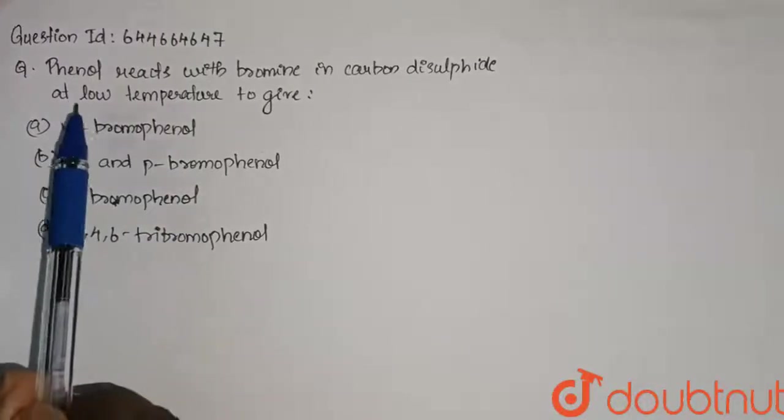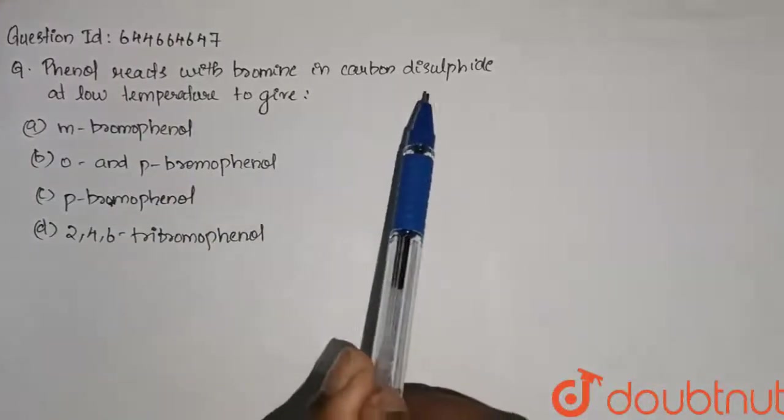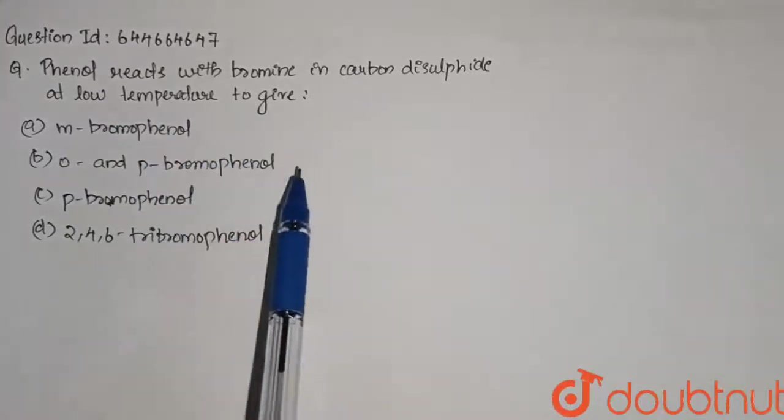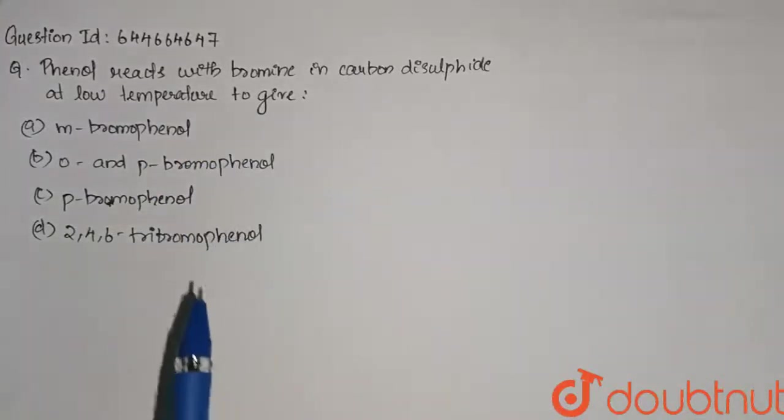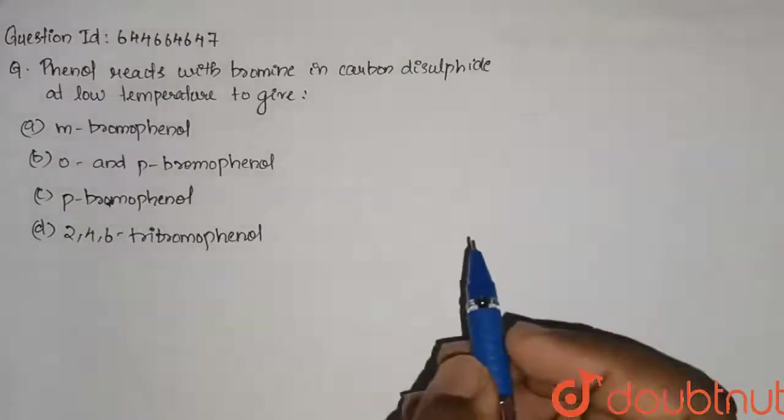The question here is, phenol reacts with bromine in carbon disulfide at low temperature to give. So, we have to see what products phenol gives when it reacts with bromine in the presence of carbon disulfide.